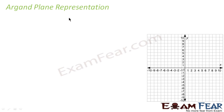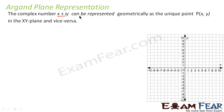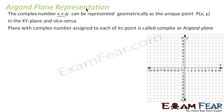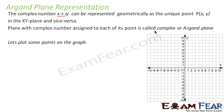Let's discuss Argand plane representation. The complex number x plus iy can be represented geometrically as a unique point P(x, y) in the xy plane. We take any value for x and any value for y, plot the point, and we get x plus iy. The plane with a complex number assigned to each point is called the complex or Argand plane.